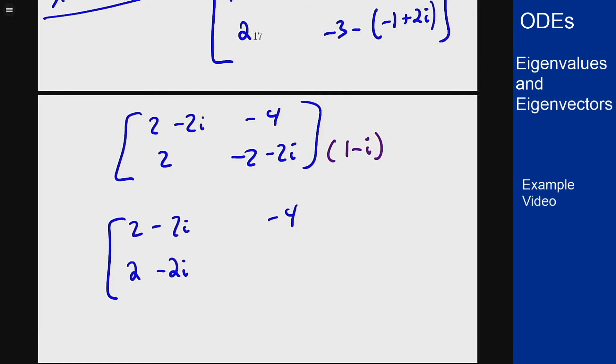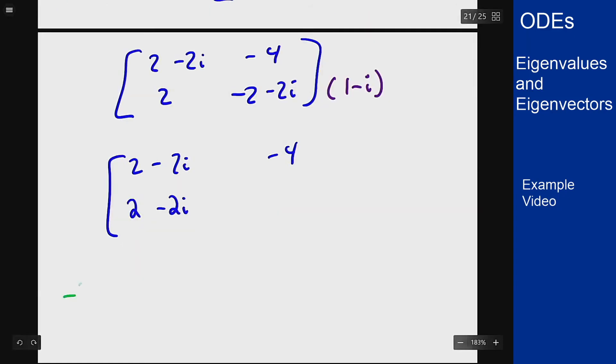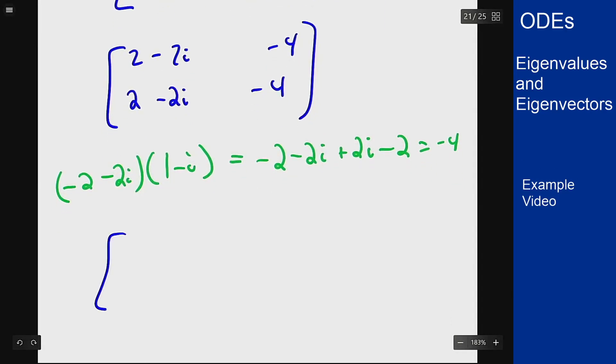So to do that we have to multiply out complex numbers. Negative 2 minus 2i times 1 minus i is going to give me negative 2 minus 2i plus 2i, and then we have negative 2i times negative i. The ii is a minus 1, those minus signs cancel, giving me a minus 2. So this is in fact minus 4. These are now redundant equations. What I'm left with for row reduction of the matrix is 2 minus 2i, minus 4, 0, 0, or dividing everything by 2: 1 minus i, minus 2, 0, and 0.